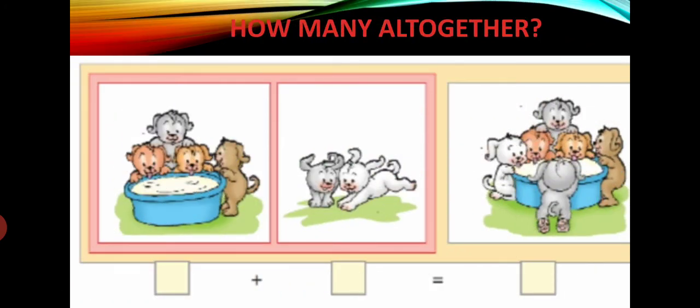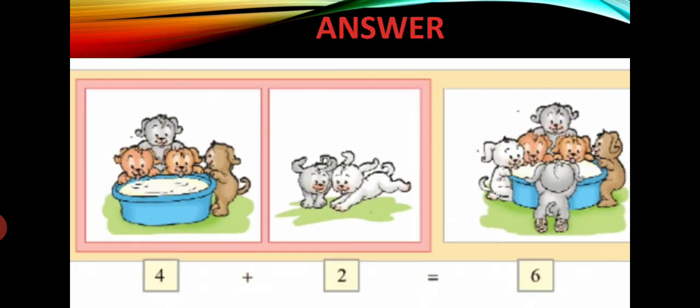Next. 4 puppies are there licking milk. You can see 4 puppies and they are licking the milk. So you can write down 4. 2 more puppies are coming to them. So 4 plus 2. Now count — how many all together? 1, 2, 3, 4, 5, 6. So 4 plus 2 is equal to 6. You can write: 4 plus 2 is equal to 6.